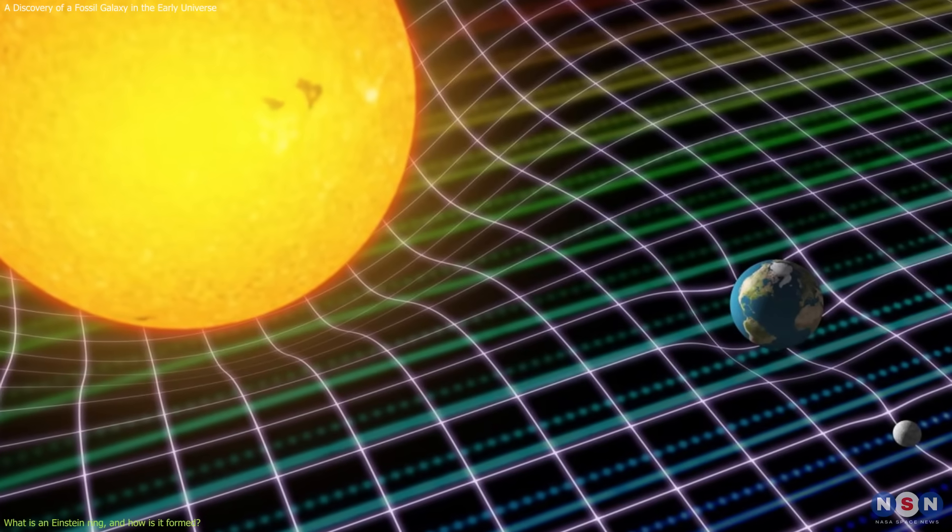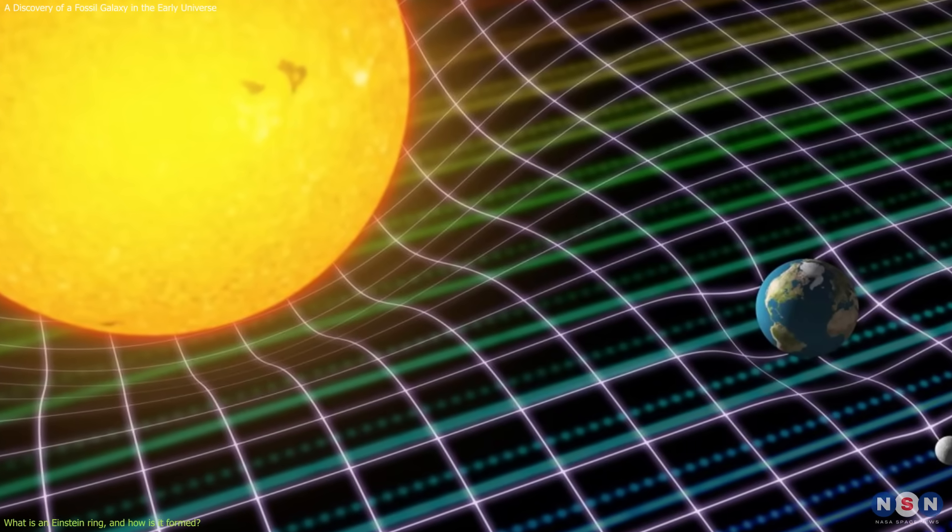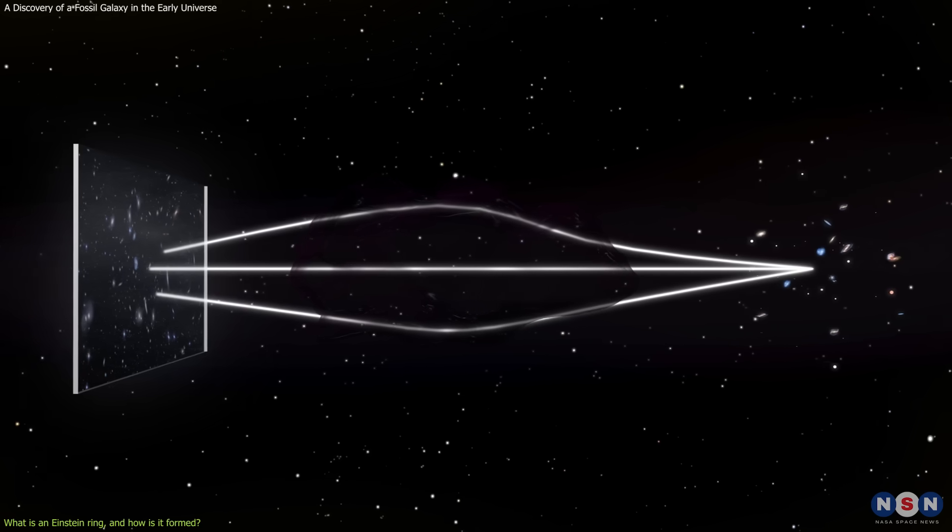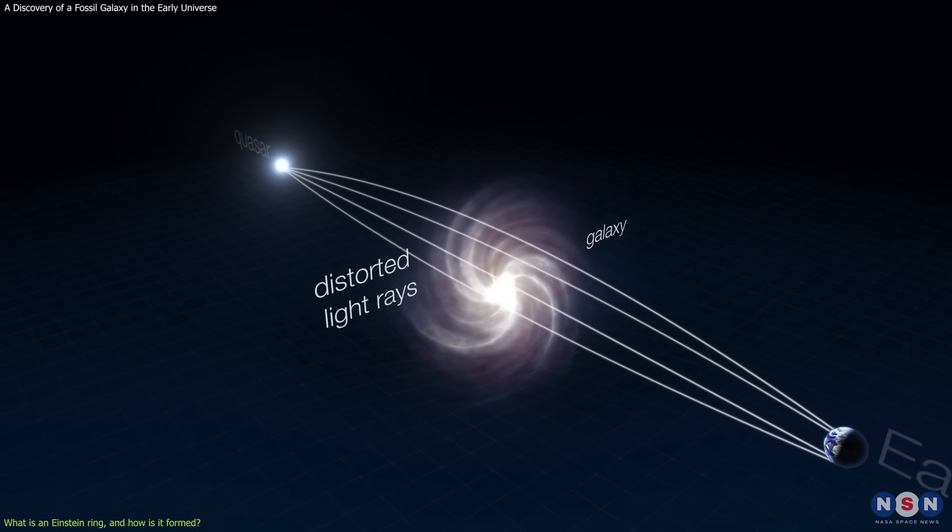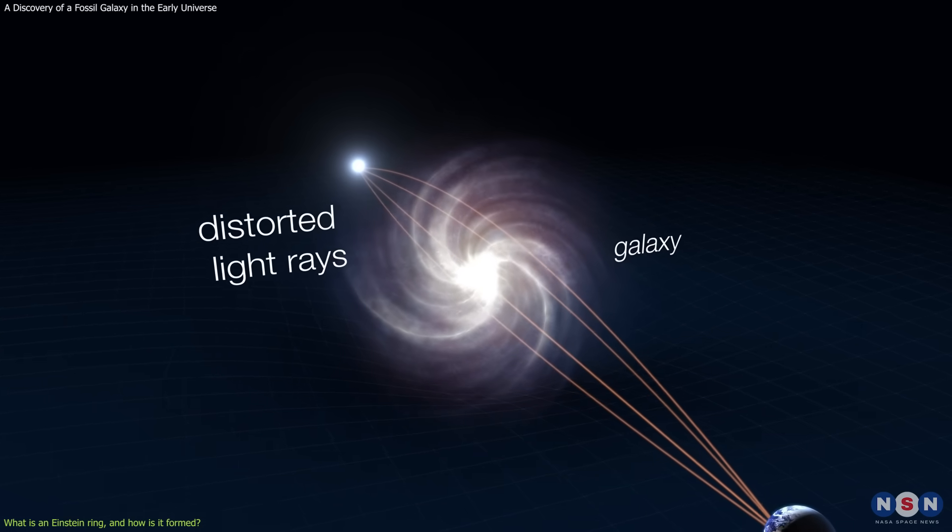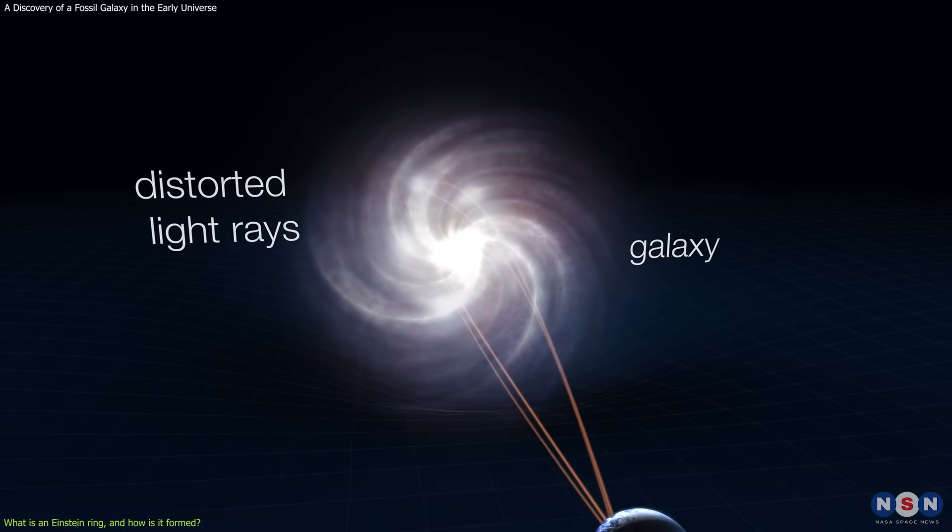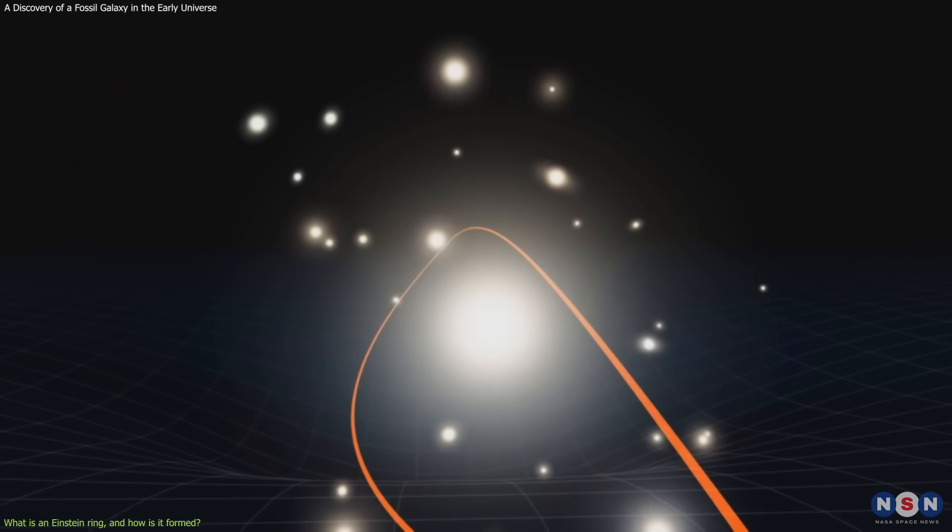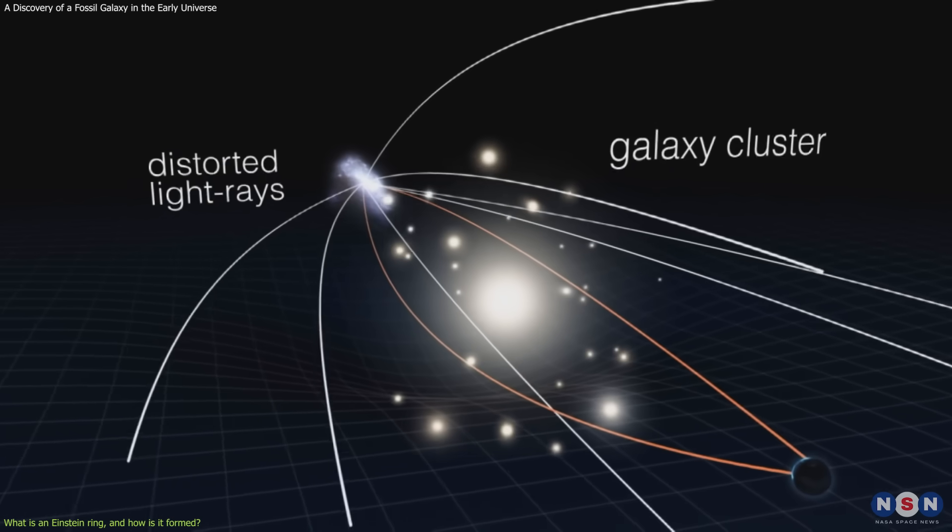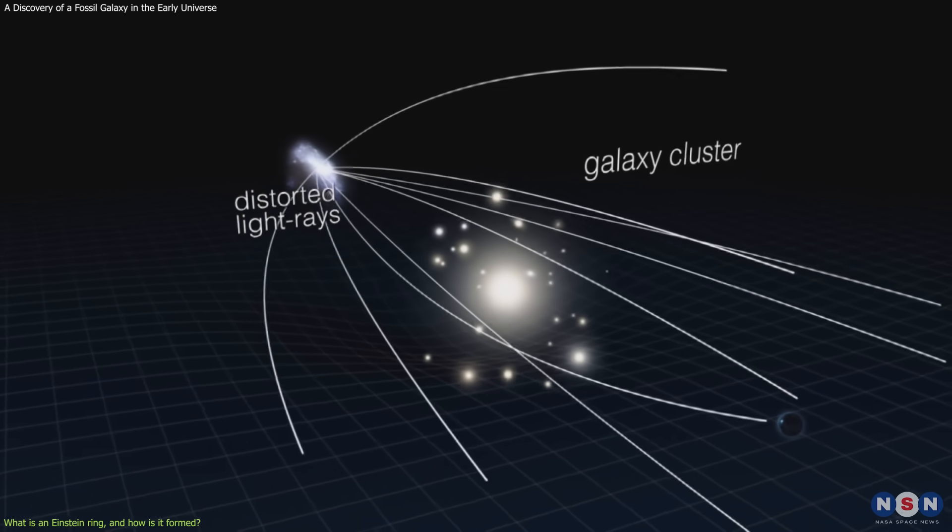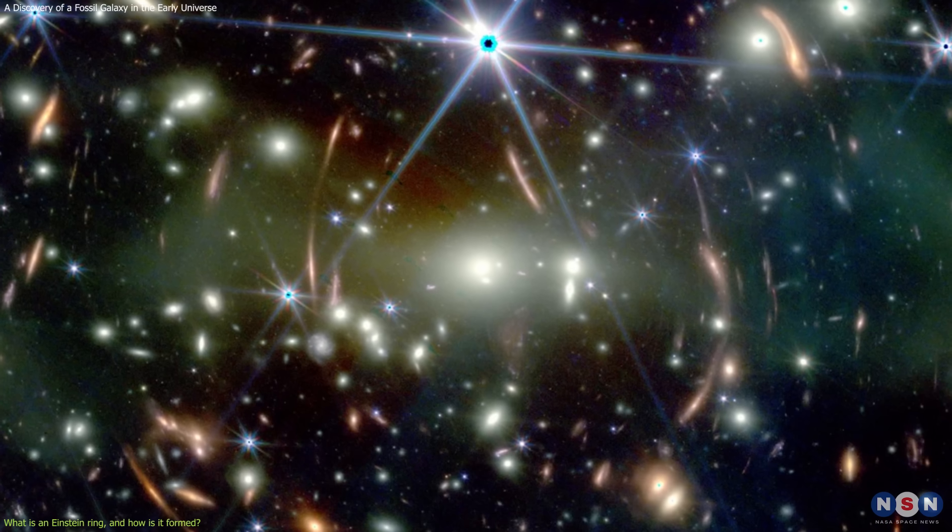This means that any object with mass can bend the space and time around it and thus affect the path of light that passes near it. Now imagine that there are two galaxies aligned along our line of sight, one closer to us and one farther away. The closer galaxy acts as a lens, bending the light from the farther galaxy. Depending on the mass, distance, and alignment of the two galaxies, the light from the farther galaxy can be distorted, magnified, or split into multiple images.